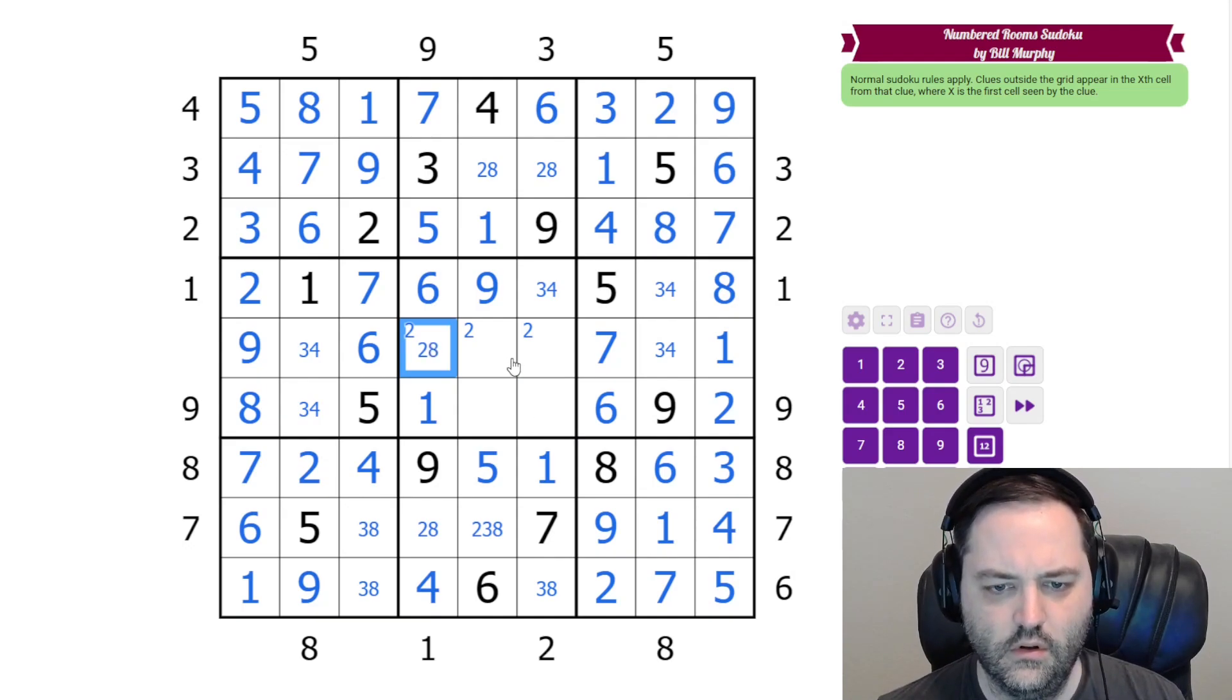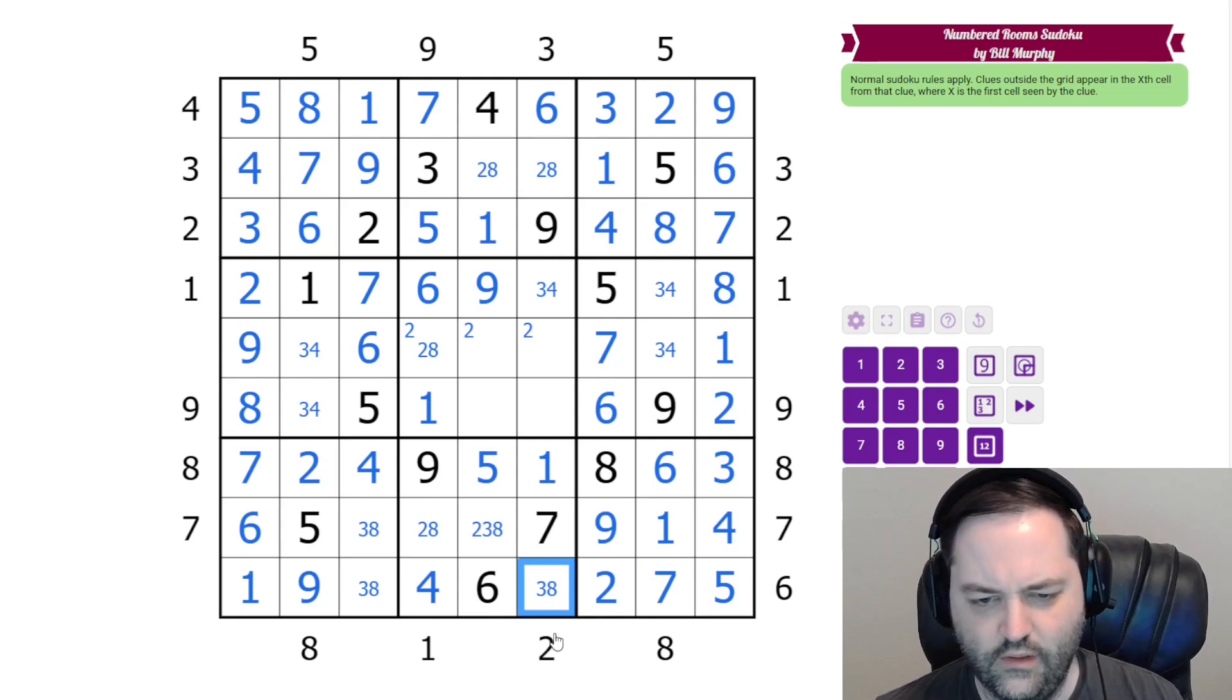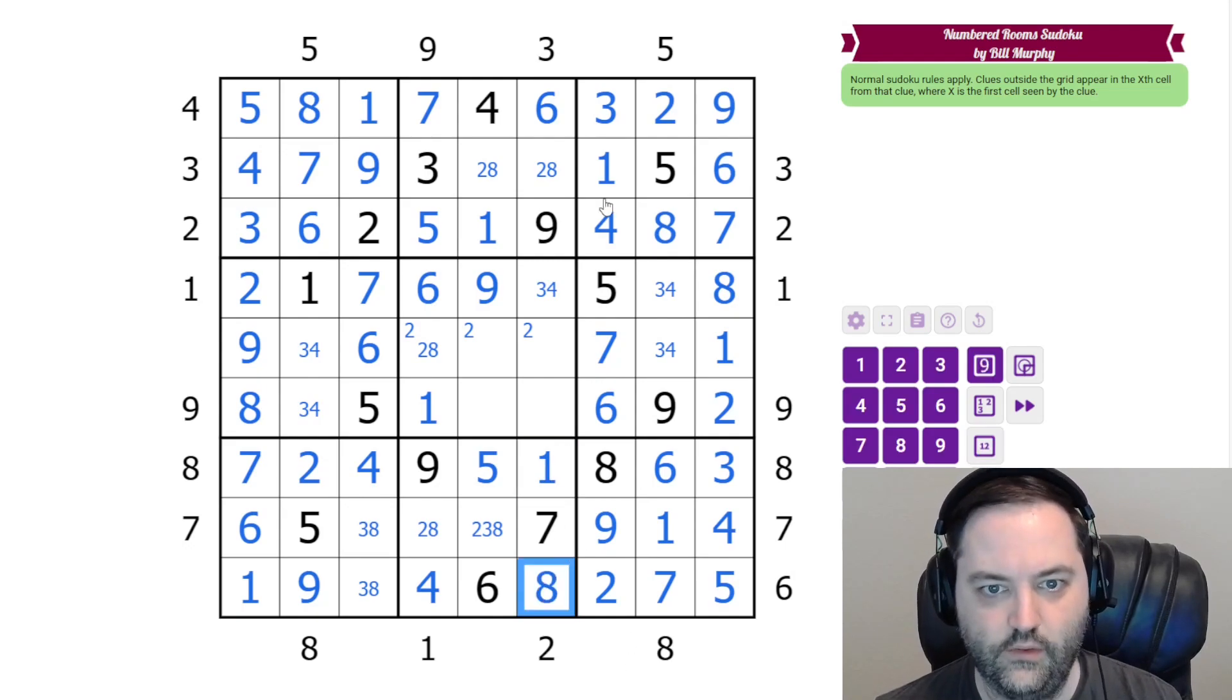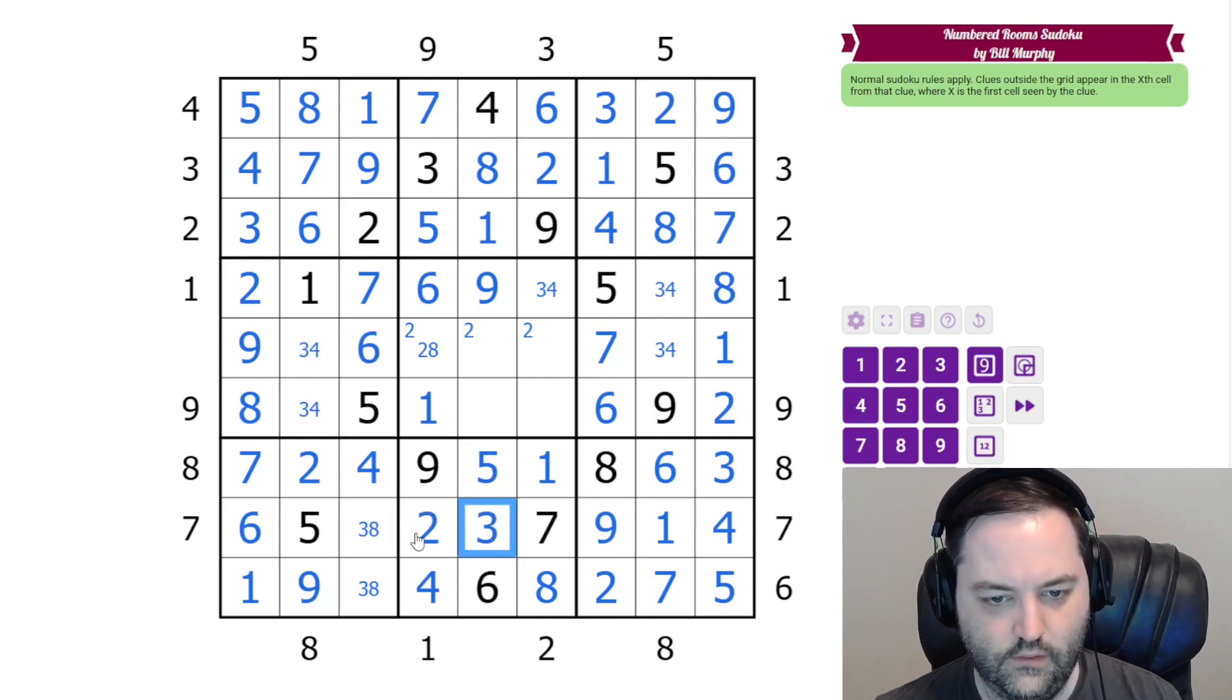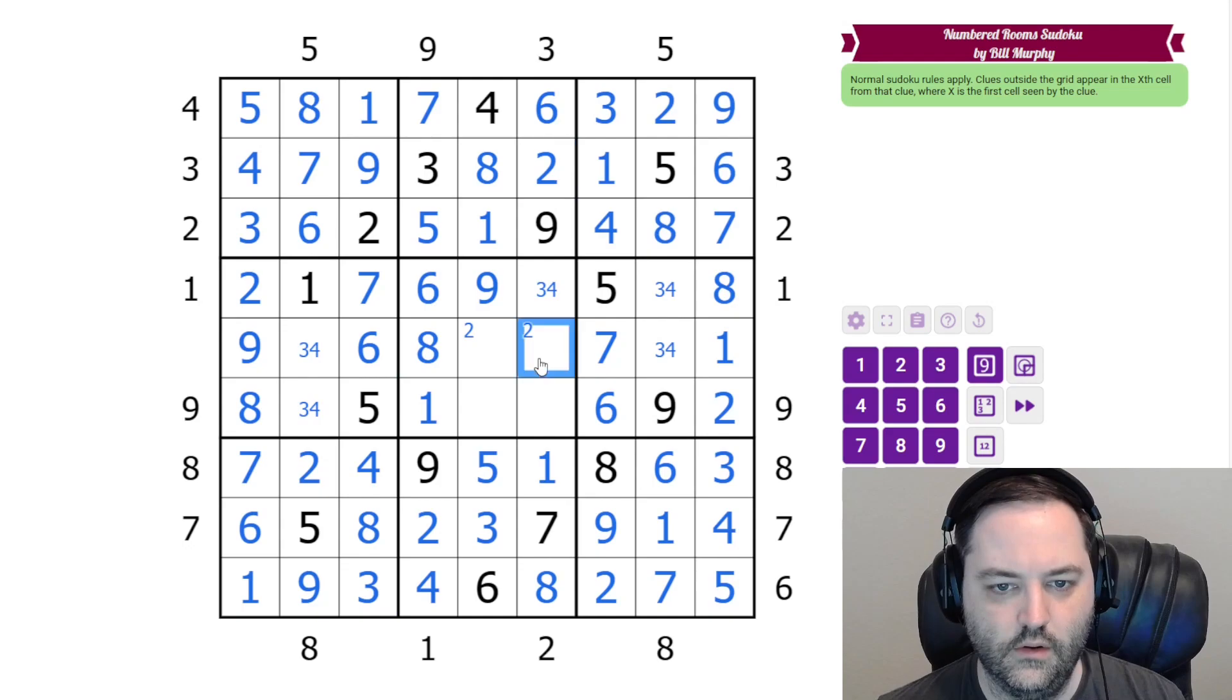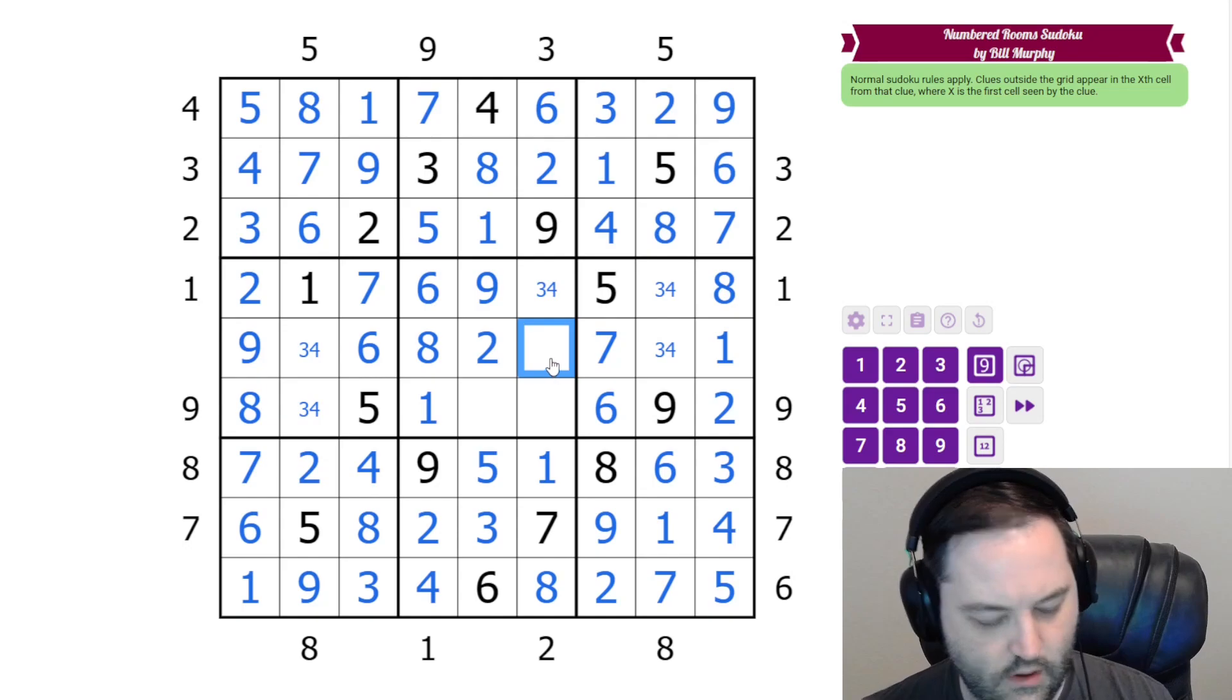Let's see if we can do the same thing here. We probably could have done this a while ago. The 2 in this column is either in the 3rd cell. Well, that's not a 2. So it's in the 8th cell. And that's 2, 8. And this is not... Actually, this is 2, 3, 8. From this 8, this is 3. This is 8. The 2 here means this is 2. We just need a 5 in the column.